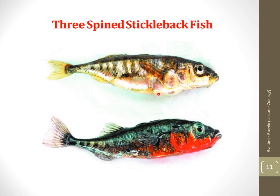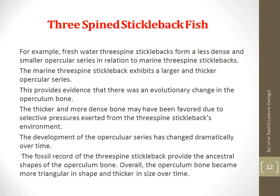This slide shows the image of the three-spined stickleback fish. Freshwater three-spined stickleback forms a less dense and smaller opercular series compared to marine three-spined stickleback. The smaller and more dense bone may have been favored due to selective pressures exerted from the three-spined stickleback's environment.